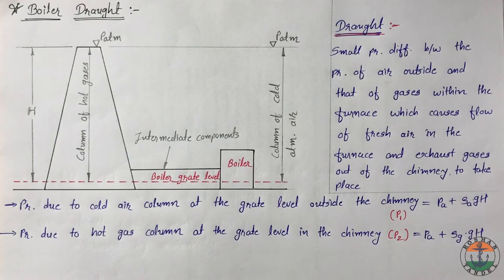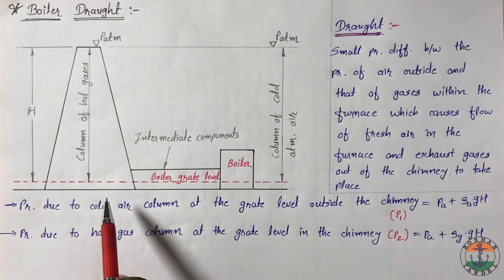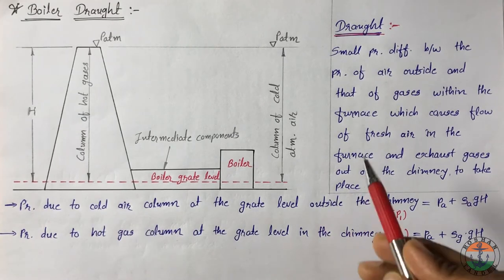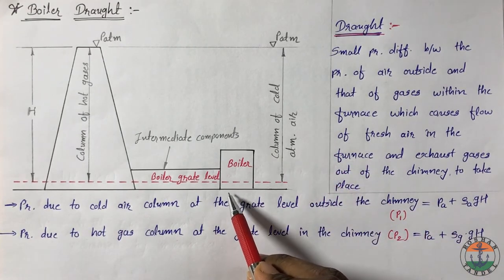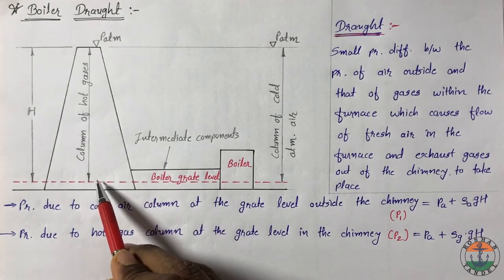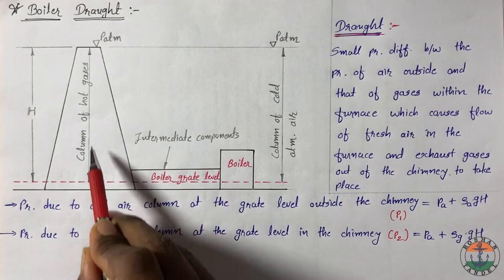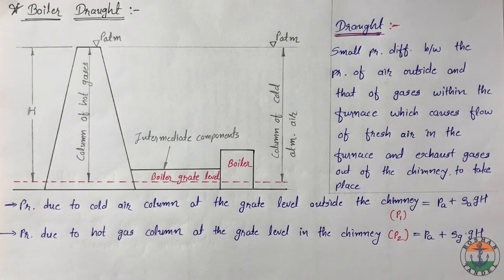In this lecture we are going to discuss about the draft system. Consider the schematic arrangement of a chimney of height h above the grate level. Fresh air is supplied at the boiler grate and flue gas is produced because of combustion of fuel, travelling to the chimney through some intermediate components and released to atmosphere.